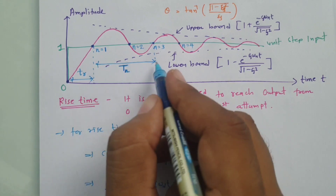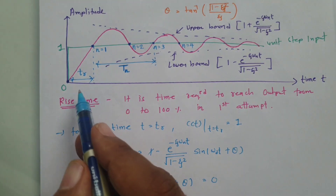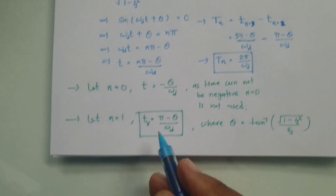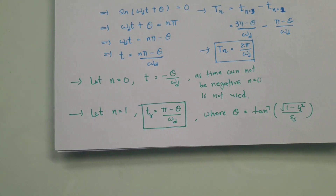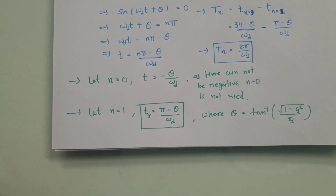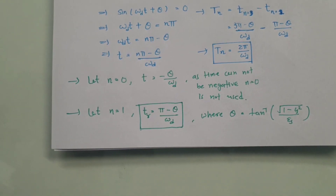To summarize, the rise time is t_r = (π − θ) / ω_d, and the time period of one oscillation is T_n = 2π / ω_d. I hope you have understood this video. If you have any queries, please place them in the comments and I will try to get back to you. Thank you so much for watching.